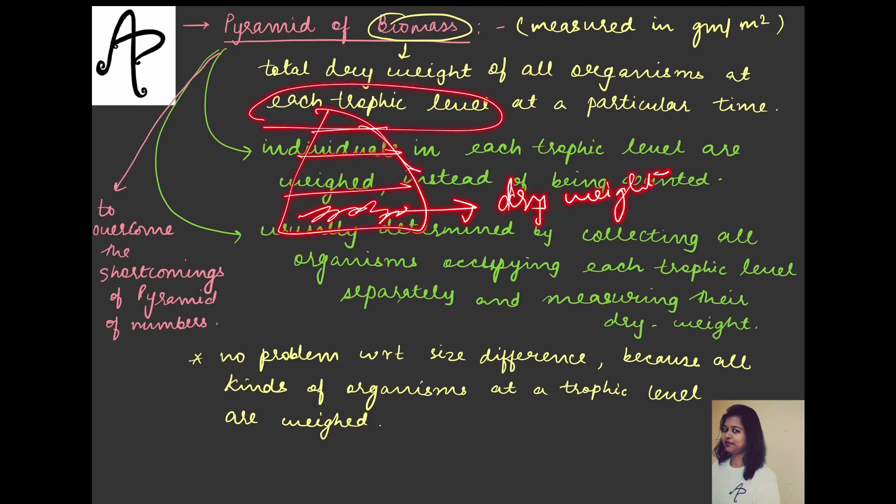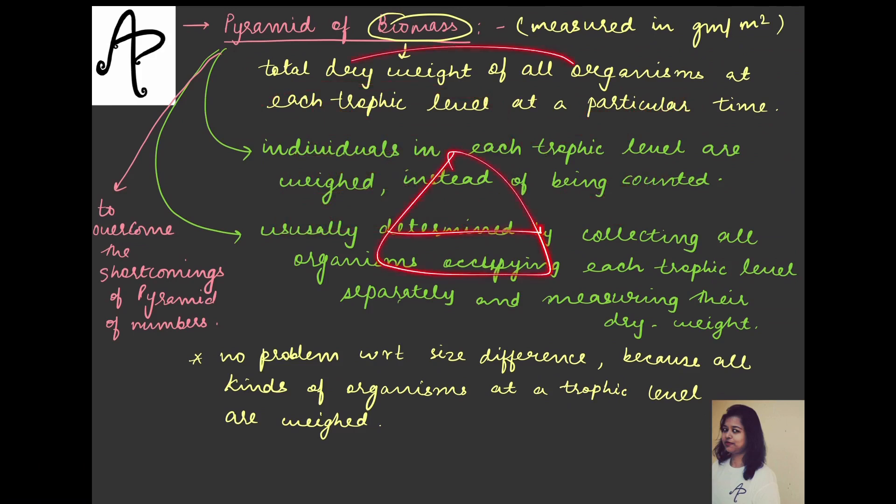So in the pyramid of numbers, for each trophic level, we were just looking at the number of individuals. Counting one, two, three, four, five, something like that. But here at each level what we are talking about is the total dry weight of the organisms and not just the numbers. How is the biomass measured? It is measured in gram per meter square.